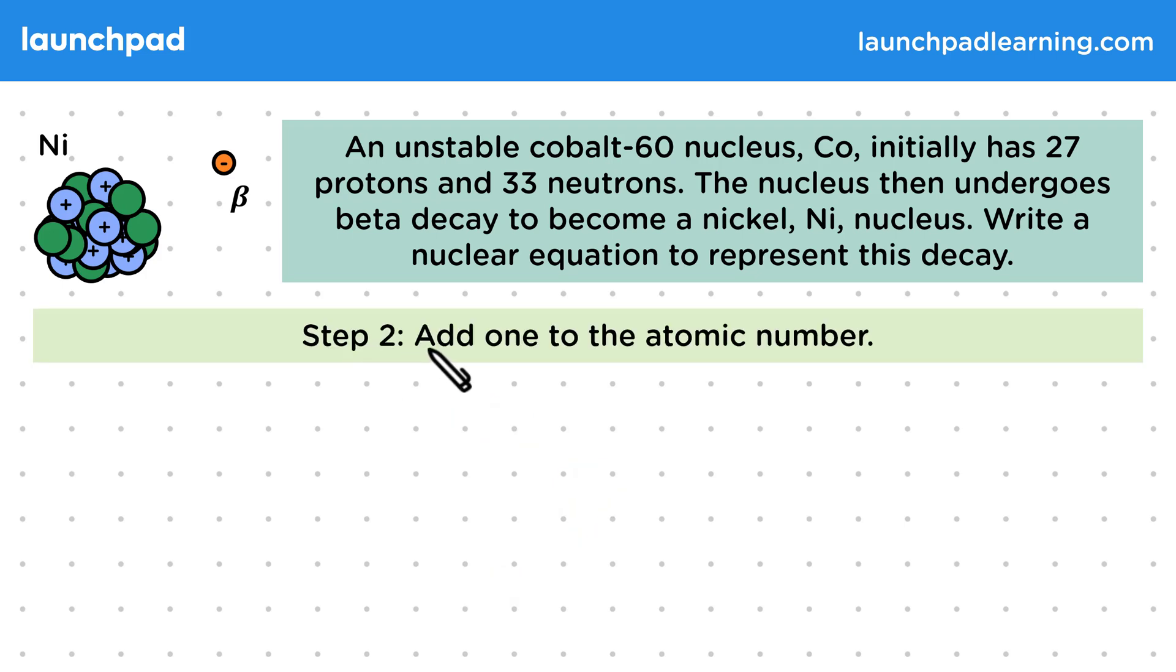For step 2, all we need to do is add 1 to the atomic number. So that's 27 plus 1 gives us 28 protons.